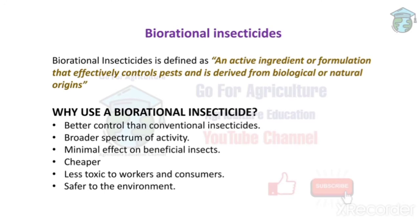Another advantage is minimal effect on beneficial insects. Conventional insecticides kill all kinds of insects, but bio-rational insecticides have the main advantage of killing only target organisms without harming beneficial insects at all. They are also cheaper and more affordable, less toxic to workers and consumers, and safer to the environment.